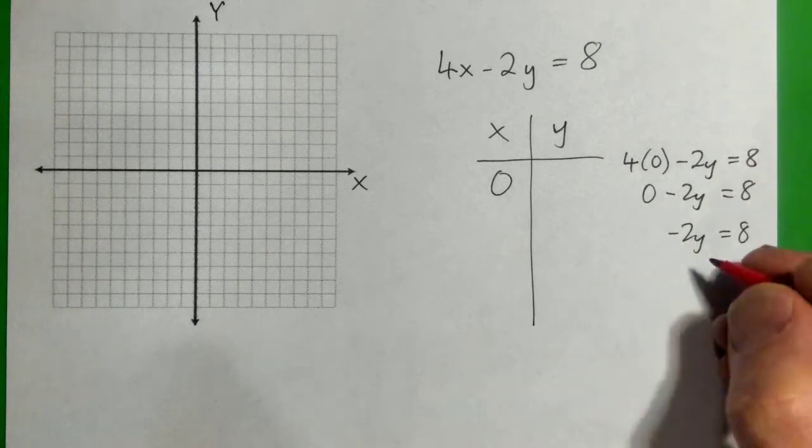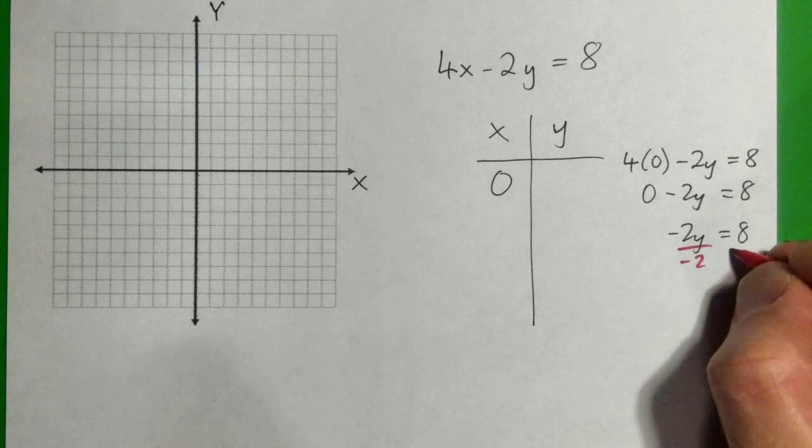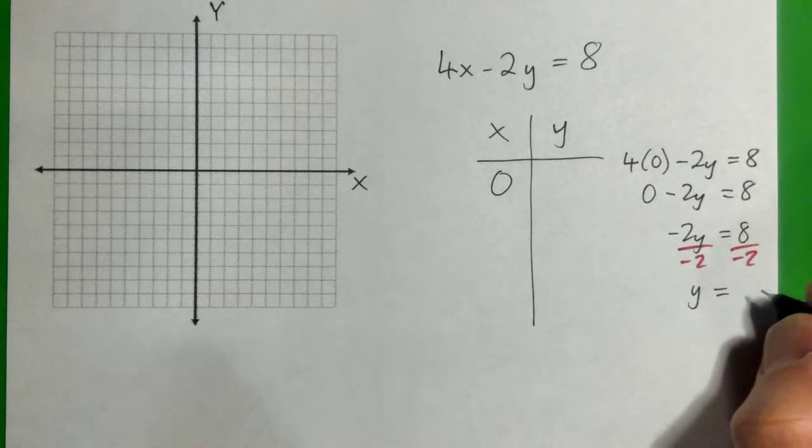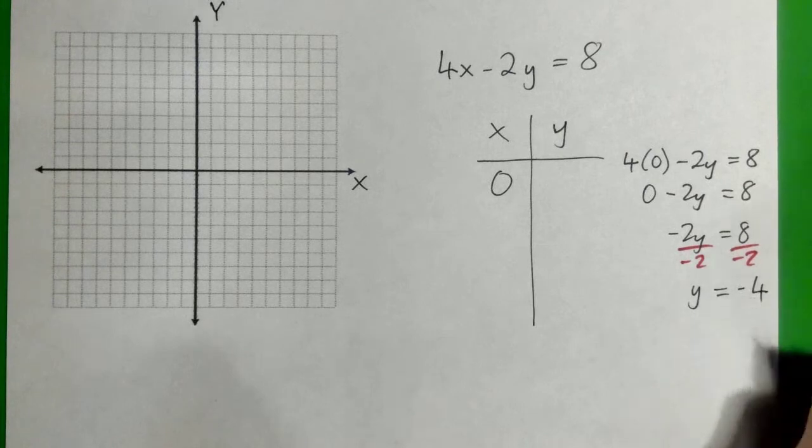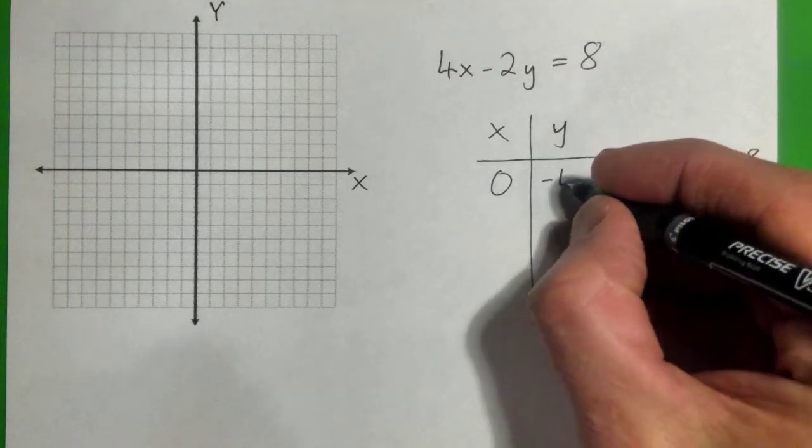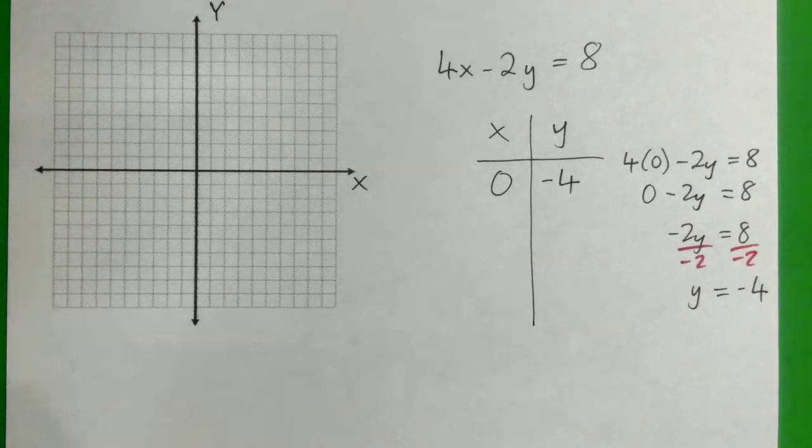So then to get y, divide by negative 2, and y equals negative 4. So when x is 0 in this equation, y is negative 4. And now we have one point on the line. So plot that point, and where is it?